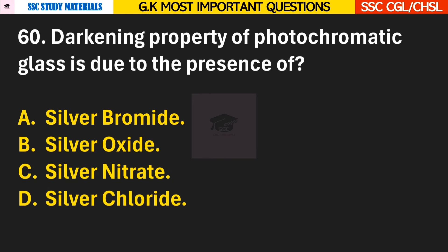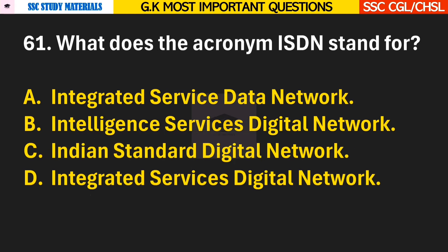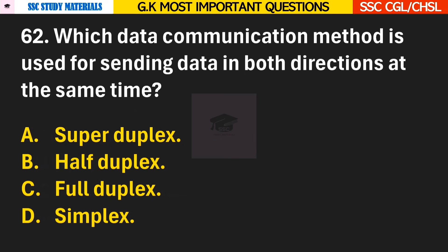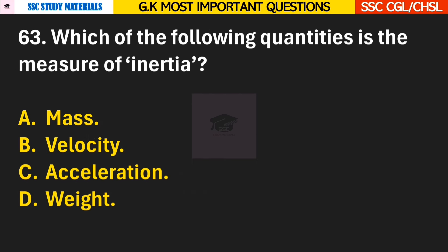Question 60: Darkening property of photochromatic glass is due to the presence of? Answer D — Silver chloride. Question 61: What does the acronym ISDN stand for? Answer D — Integrated Services Digital Network. Question 62: Which data communication method is used for sending data in both directions at the same time? Answer C — Full duplex. Question 63: Which of the following quantities is the measure of inertia? Answer A — Mass.